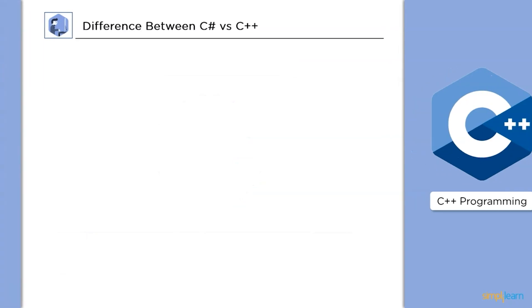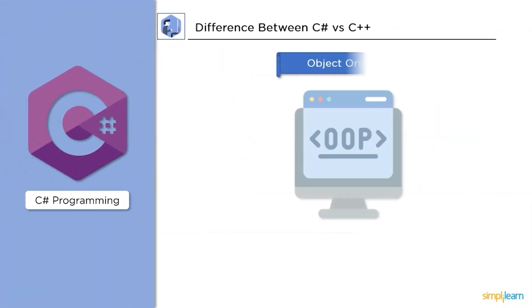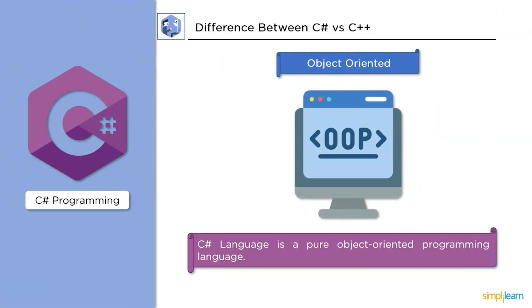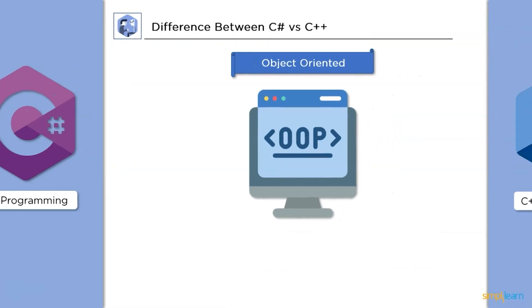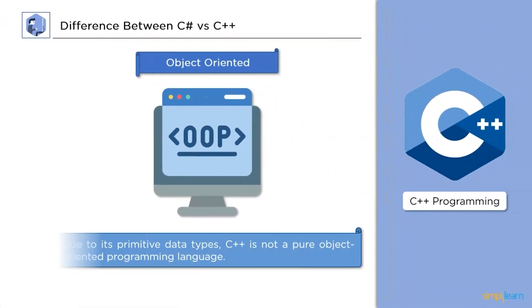Next up, object oriented. C Sharp is pure object oriented programming language. Thanks to the .NET framework, it is strengthened by encapsulation, polymorphism, and inheritance. Whereas, C++ is not a pure object oriented programming language due to the primitive data types.